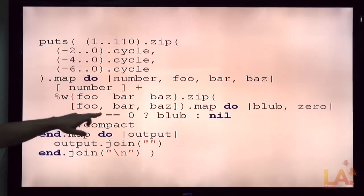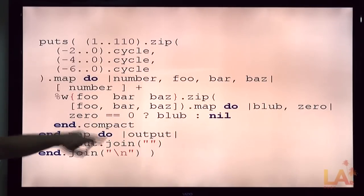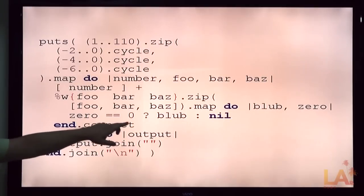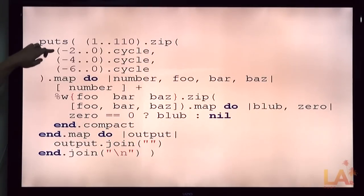And mapping that to the string and what's possibly zero. If zero is zero, then the thing. And what's going to happen is, every third one, foo is going to be zero. Every fifth one, bar is going to be zero. And every seventh one, baz is going to be zero. So if it's zero, then thing, otherwise nil.